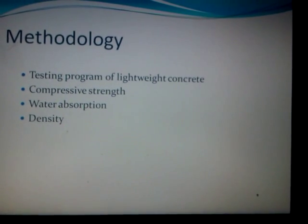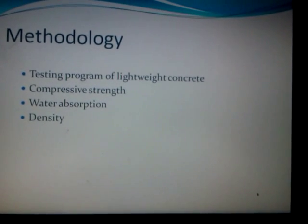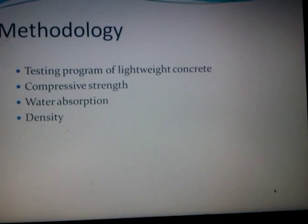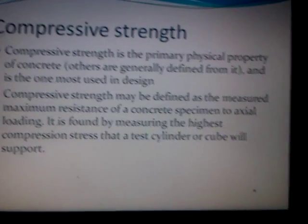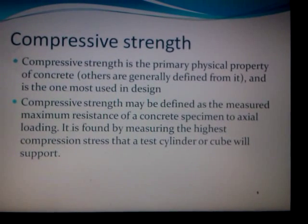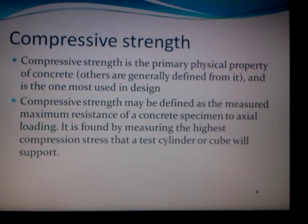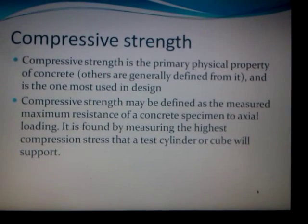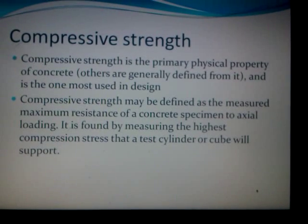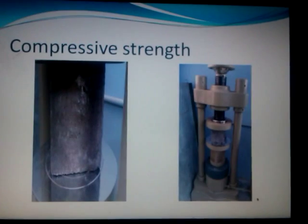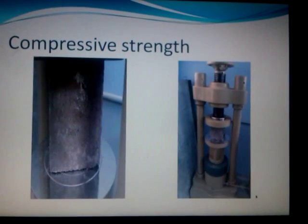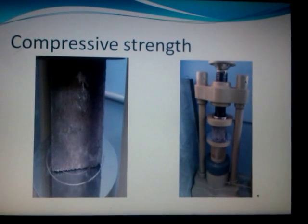The methodology involves three steps: compressive strength, water absorption, and density. Compressive strength is the primary physical property of concrete, defined as the maximum resistance of the concrete specimen to axial loading. Compressive strength was measured using a CTM (Compression Testing Machine).